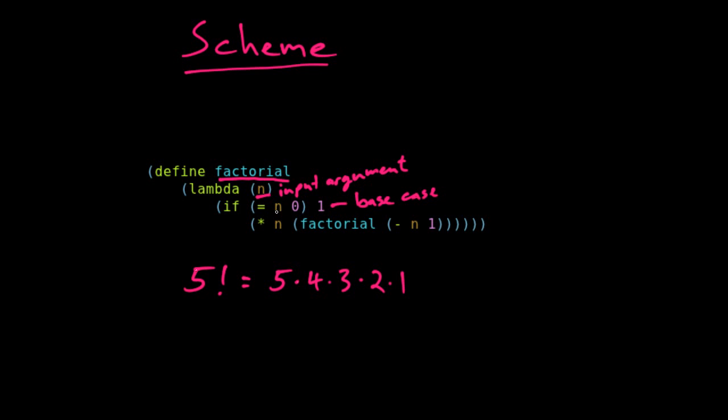And then if n is not equal to zero, we do n times the factorial of one minus n. So writing this in an infix notation, this might look like n times factorial n minus one.